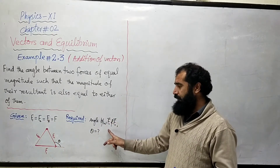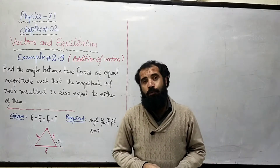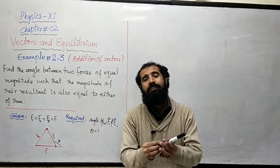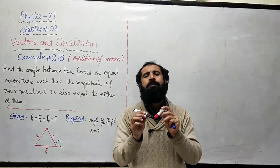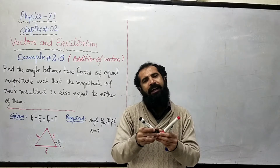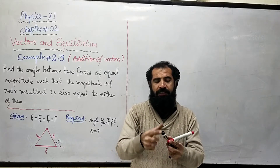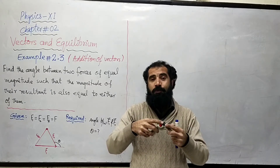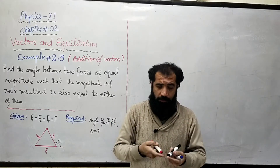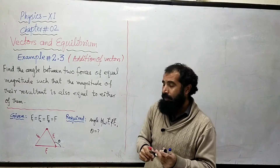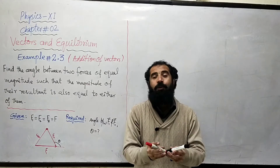Yeh baat hamesha yaad rakhein ke jab bhi do vectors ke darmiyan aap angle rakhte hain, to actually aap ne un ki directions ke darmiyan angle batana hota hai. Is ke liye aap dono vectors ki tails ko aapas mein join karte hain. Agar dono vectors ke heads aapas mein mil rahe hon, to un dono ke heads ke darmiyan ka angle bhi exactly utna hi hota hai jitna tails ko join karne se milega.